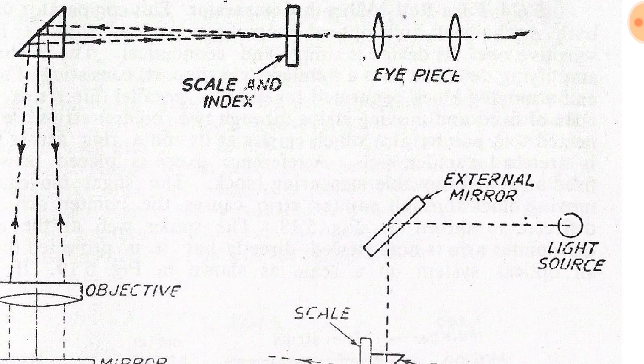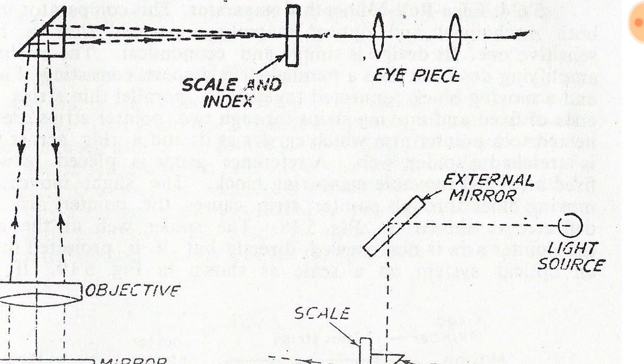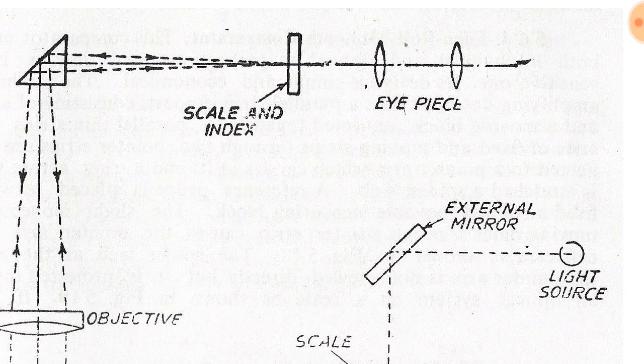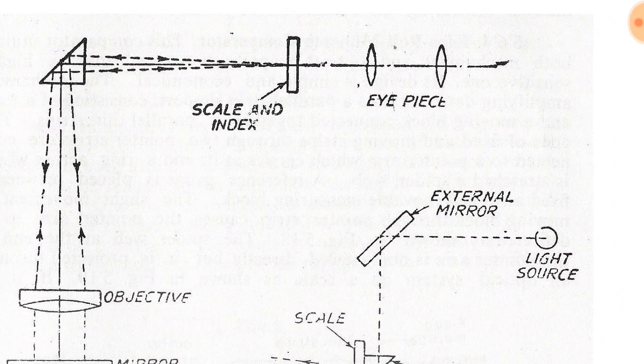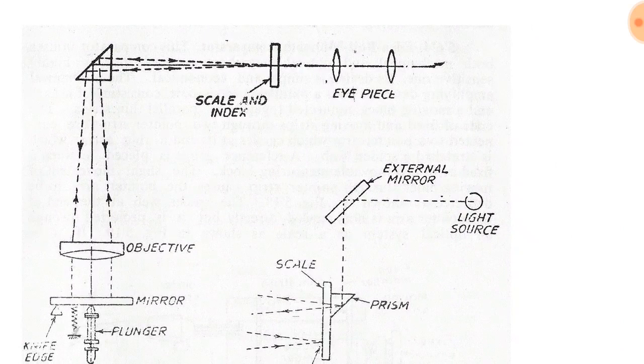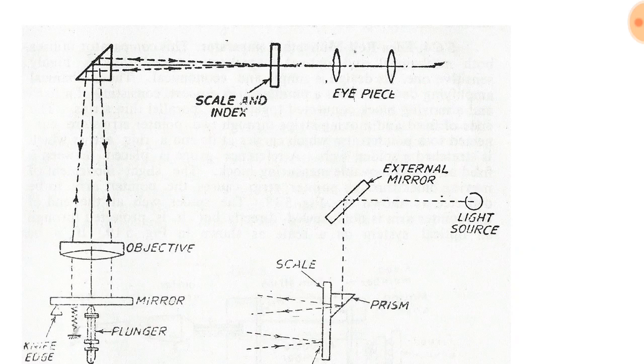With the eye placed near the eyepiece, a fine reference or index is provided, and the system of lenses is arranged so that the image of the scale is projected in the same focal plane. Thus, with the movement of the scale, the image can be measured with reference to the fixed line. The division of the scale image opposite to the index line indicates the amount of movement of the contact plunger.